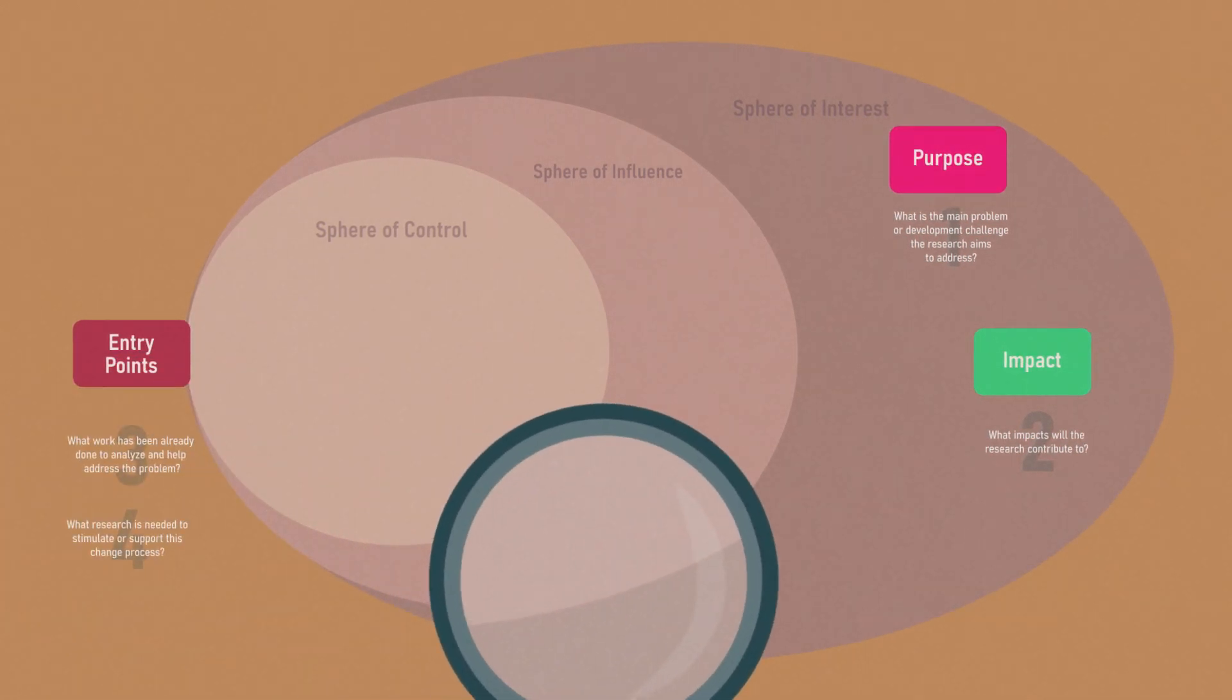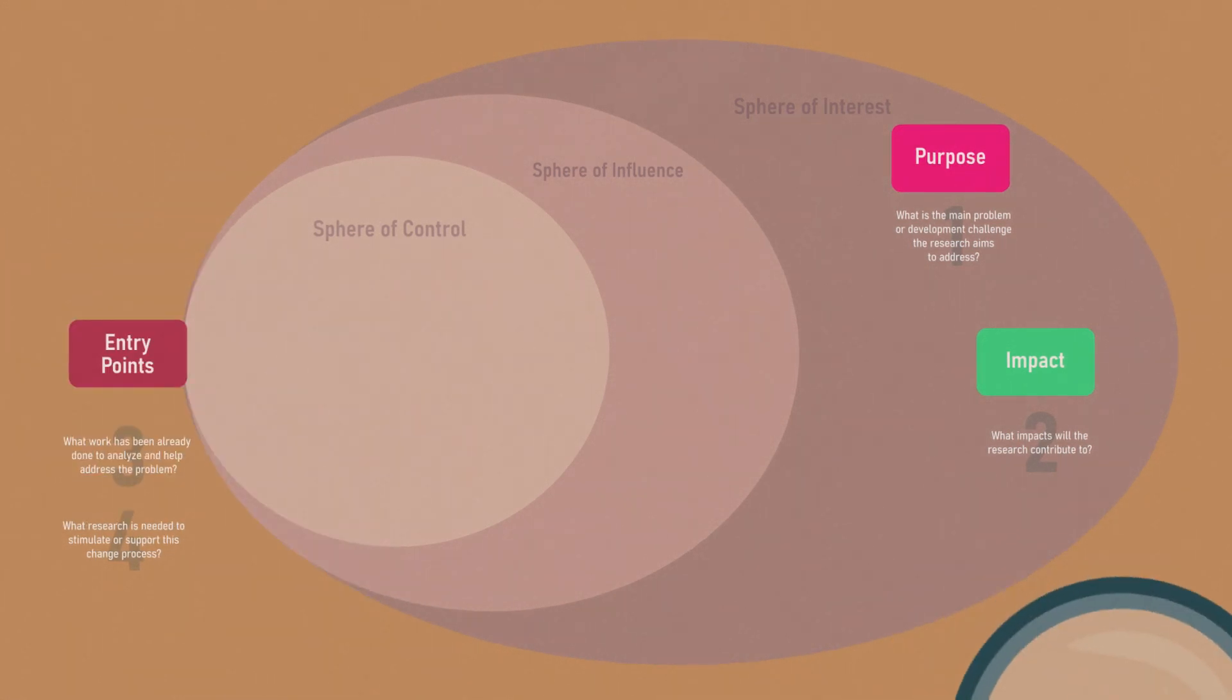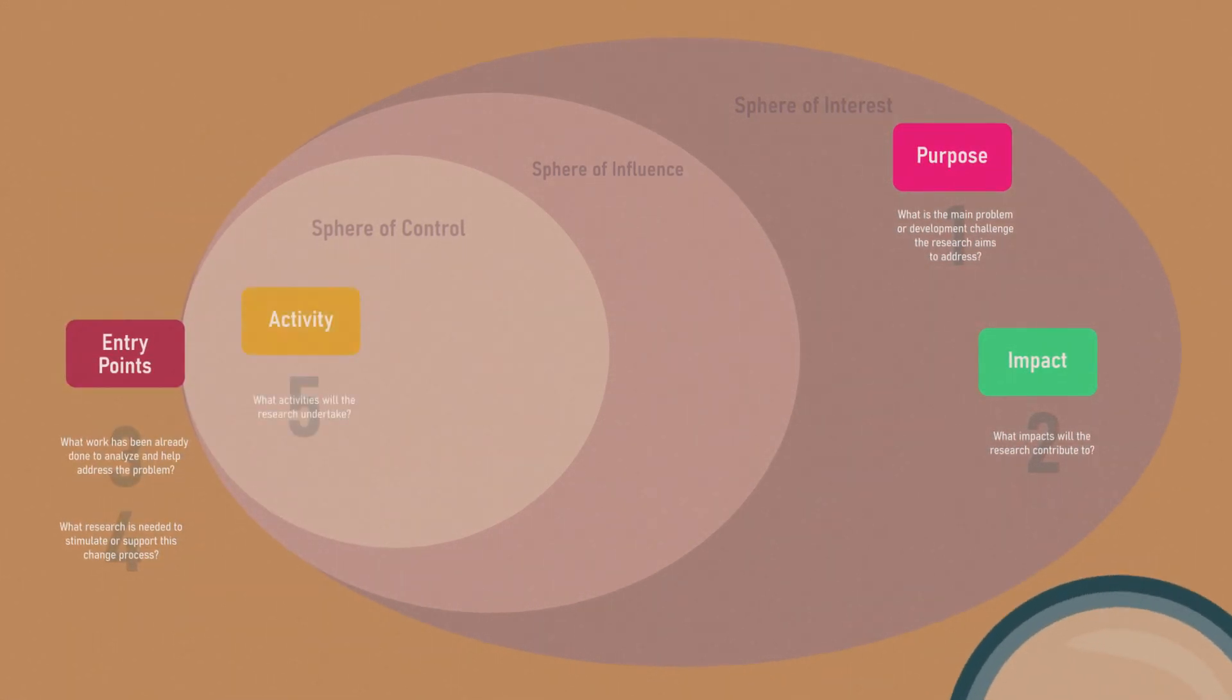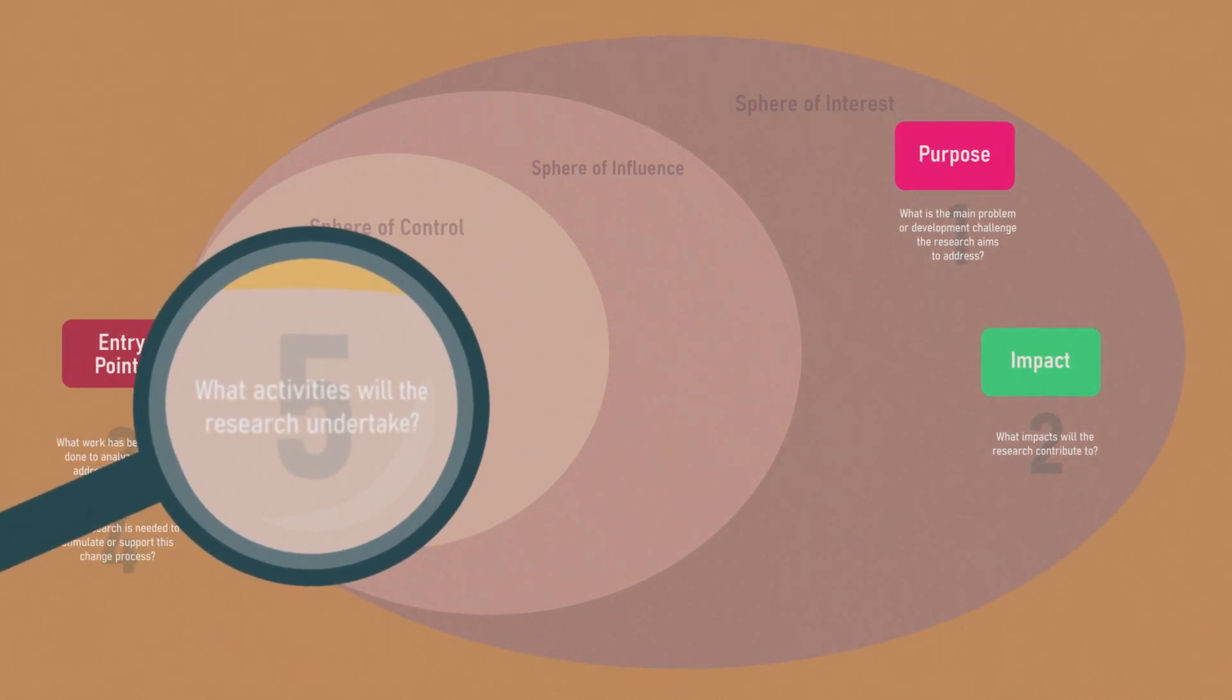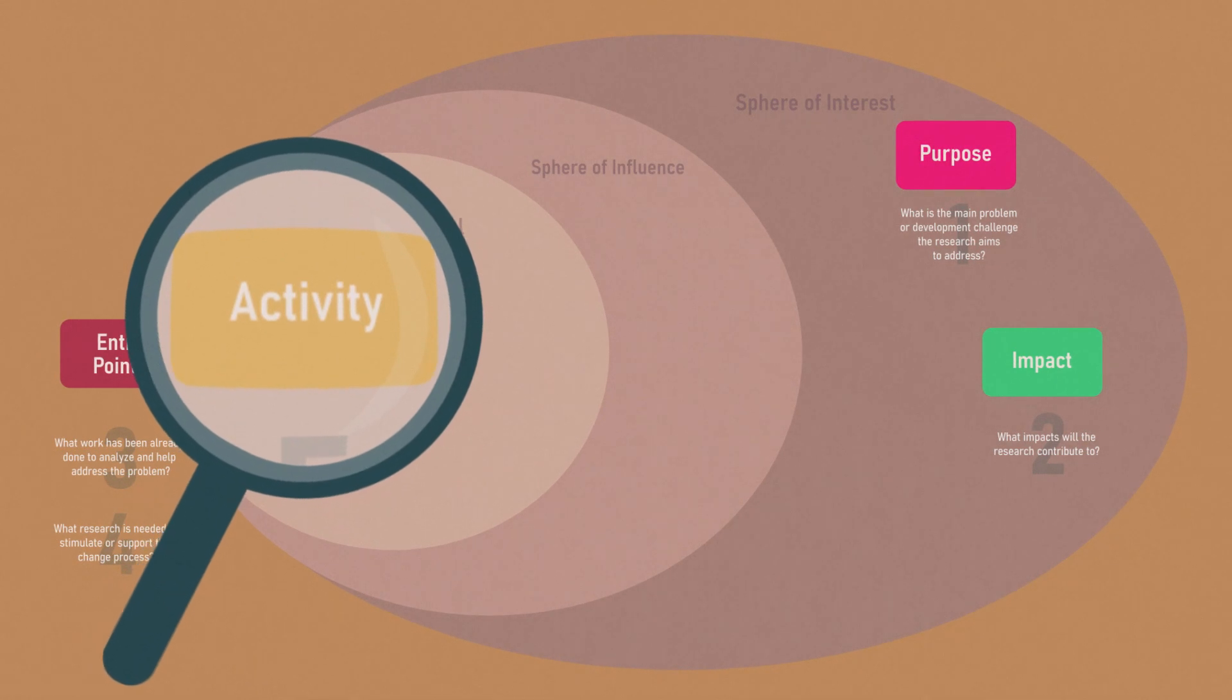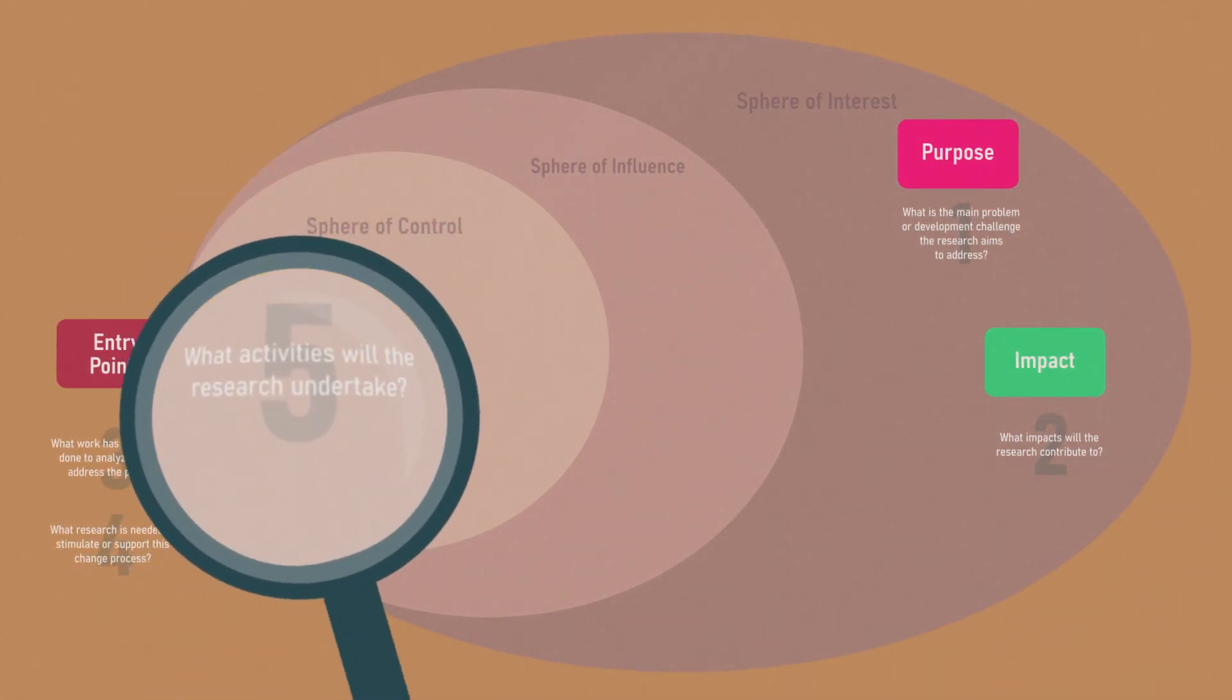A good Theory of Change makes explicit connections between what the research will do, what knowledge it will produce, and what outcomes it intends to influence. Think about what activities will the research undertake. This could involve capacity building, technical support, facilitating multi-stakeholder processes and much more.